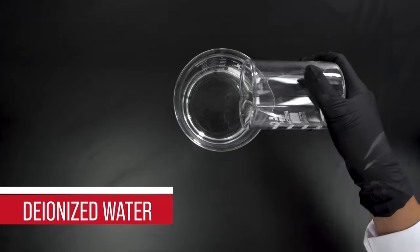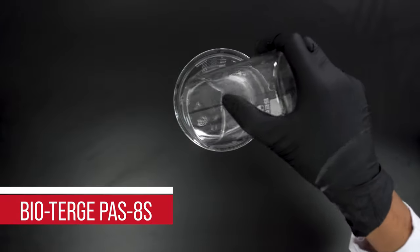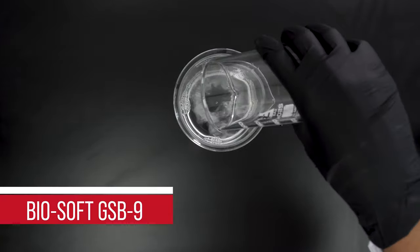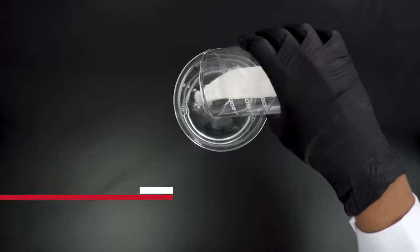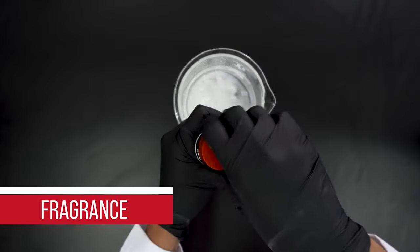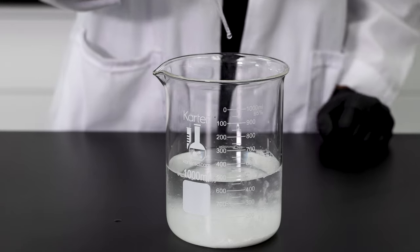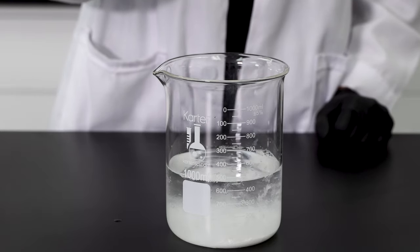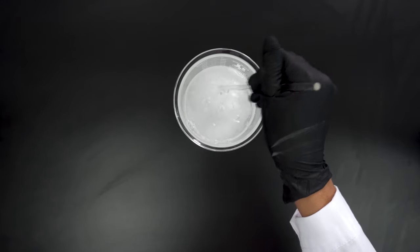Start with your deionized water. Then, slowly add your Bioterge PAS-8S, Biosoft GSB-9, sodium carbonate, and the AFI fragrance of your choice. Make sure you add your ingredients in that order and stir well until the mixture is uniform.